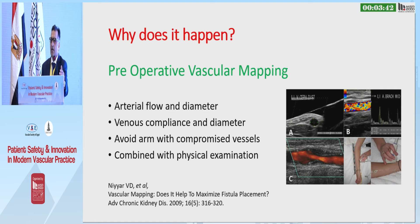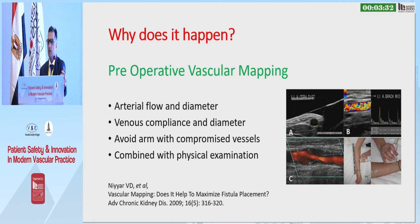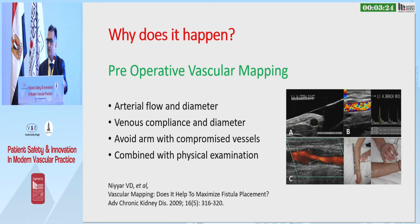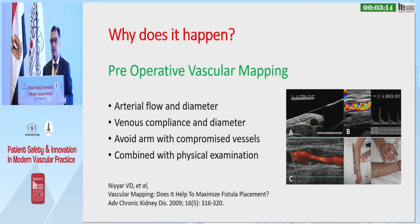Preoperative mapping. In our unit, we always get a preoperative ultrasound because it shows what the arterial flow diameter is going to be like, the venous compliance and diameter of the vein, and whether there's any upstream stenosis. Importantly, you have to combine this with physical examination of the patient. One problem is if the cephalic vein is very far from the brachial artery — the ultrasonographer won't necessarily tell you that; you have to identify it by examining the patient.